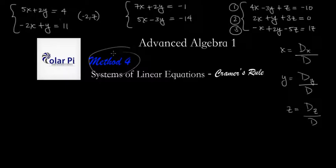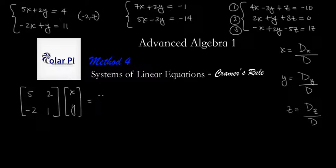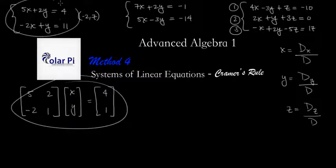In method three, I talked about how one can write this system using matrices. Specifically, you could write the matrix with entries 5, 2, negative 2, 1 times x, y equals 4, 11. This matrix equation is identical to this pair of equations.